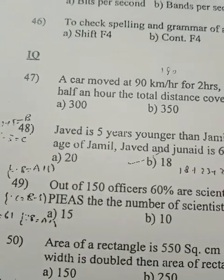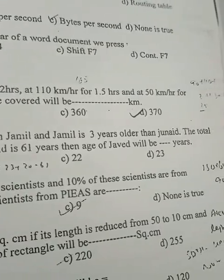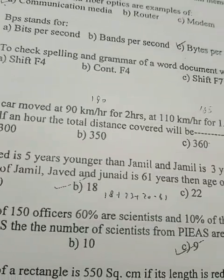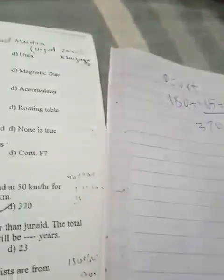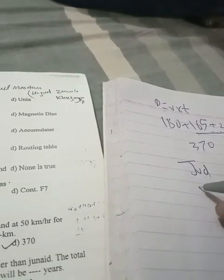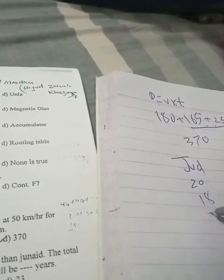Javed is five years younger than Jamil and Jamil is three years older than Junaid. The total age is 62 years, then the Javed will be. Okay, Javed's age, the options are 20, 18, 22 and 23.